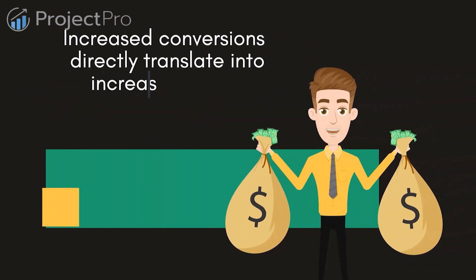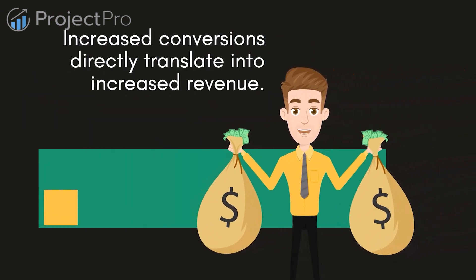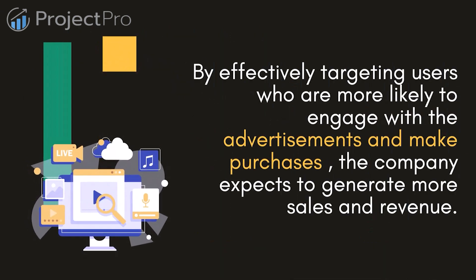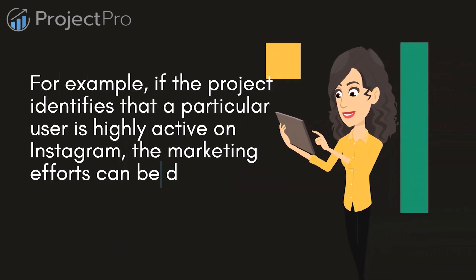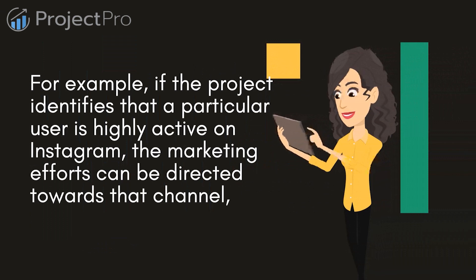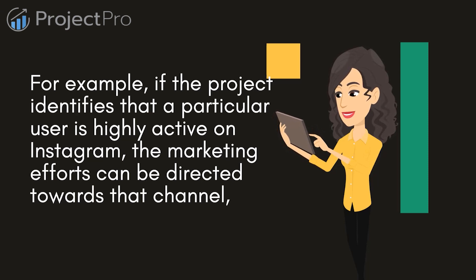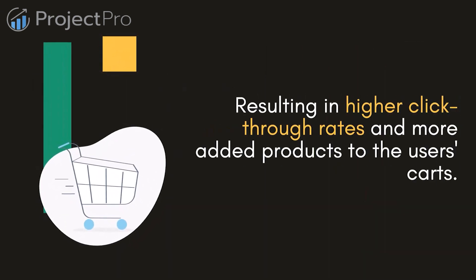Increased conversions directly translate into increased revenue. By effectively targeting users who are more likely to engage with the advertisements and make purchases, the company expects to generate more sales and revenue. For example, if the project identifies that a particular user is highly active on Instagram, the marketing efforts can be directed towards that channel, resulting in higher click-through rates and more products added to the user's carts.